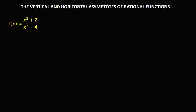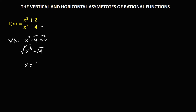For this given, to solve for the vertical asymptotes, we equate the denominator to zero. We have x squared minus 4 equals 0; transpose the negative 4, so x squared equals positive 4, then take the square root. So x is equal to positive and negative 2, meaning the vertical asymptotes are x equals 2 and x equals negative 2.